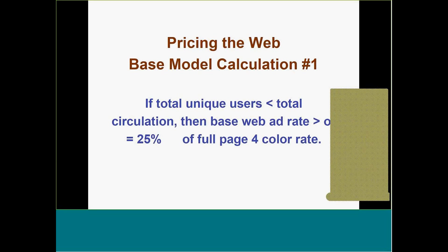Let's talk about pricing the web. Base model calculation number one: if your total unique user count is less than your magazine circulation, your average rate should be approximately 25% of the cost of a full-page ad in your magazine. If your unique user count is less than your total circulation, the base price for one of your banner ads — your starting point — should be about the same as 25% of a four-color full-page ad, one-time rate.